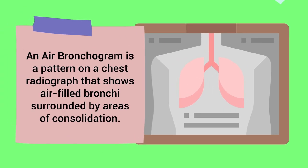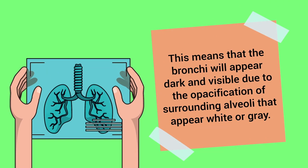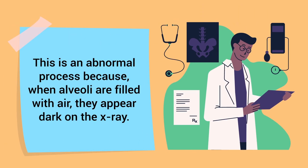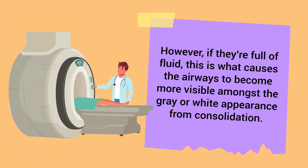An air bronchogram is a pattern on a chest radiograph that shows air-filled bronchi surrounded by areas of consolidation. This means that the bronchi will appear dark and visible due to opacification of the surrounding alveoli, which appear white or gray. This is an abnormal process because when alveoli are filled with air, they appear dark on the X-ray.